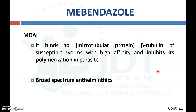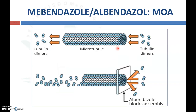The first drug used as an anthelmintic is mebendazole. Coming to the mechanism of action: the tubular-like structure of helminths is made up of a microtubular protein known as tubulin. Mebendazole and albendazole will bind with the microtubular protein or beta-tubulin of susceptible worms with higher affinity, thereby inhibiting its polymerization in parasites and killing the different helminths. This is a broad-spectrum anthelmintic that can be used for different types of worms.